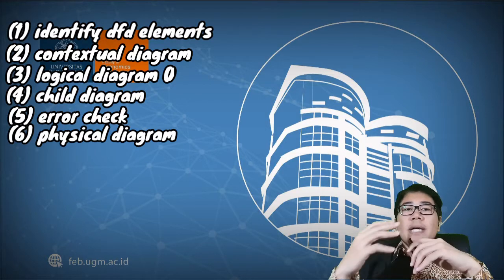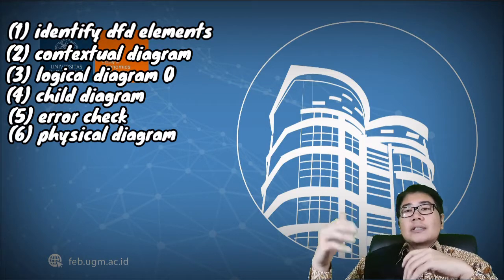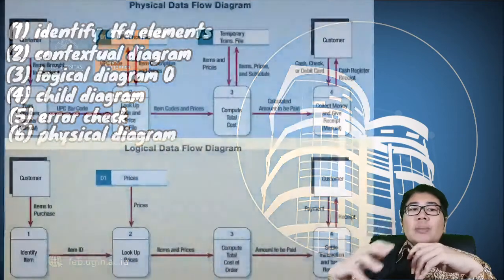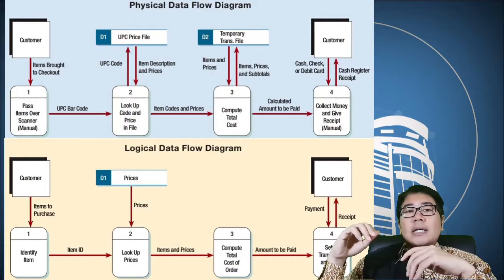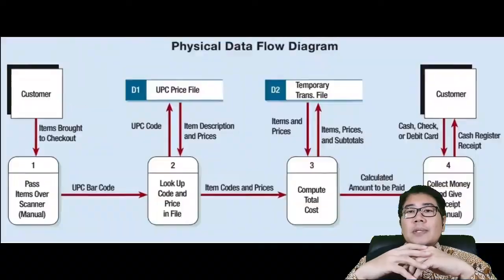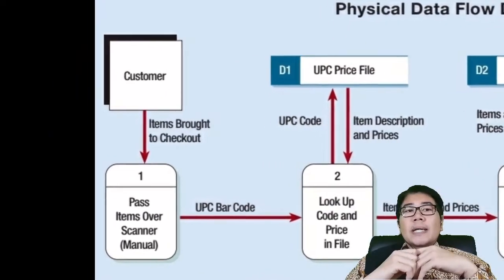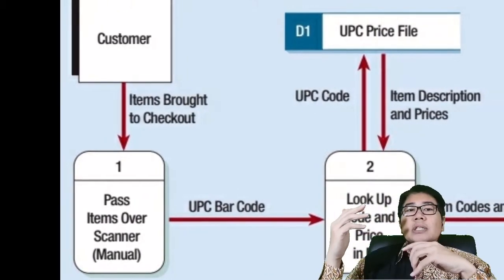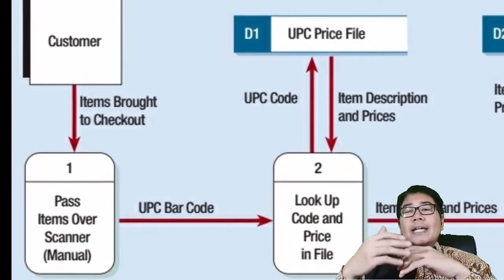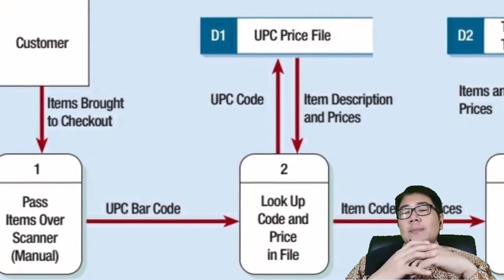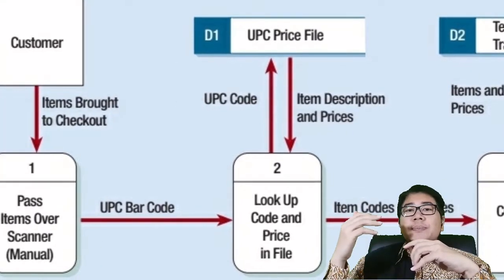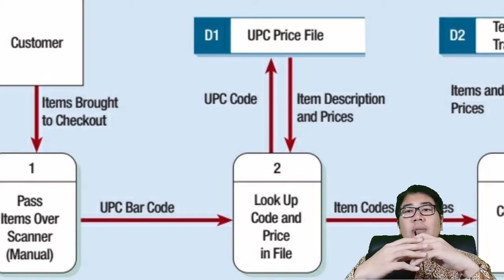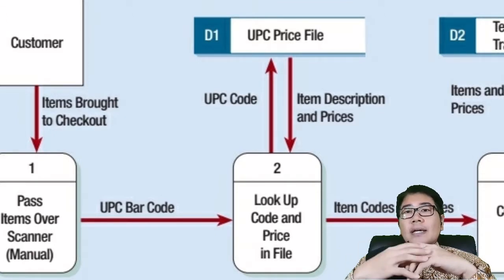The physical data flow diagram will show all the real activities inside the information system. We can see the difference between logical and physical diagrams in this figure. For example, at the checkout process, in the physical diagram it shows that the physical process is to scan a barcode. While on the second process, look up for price, the physical process consists of looking up a UPC code, and then based on the UPC code, it will retrieve the item description and the item prices.